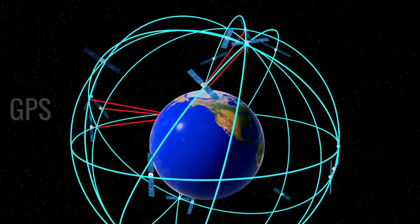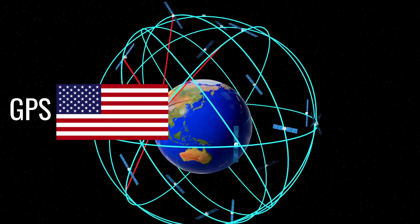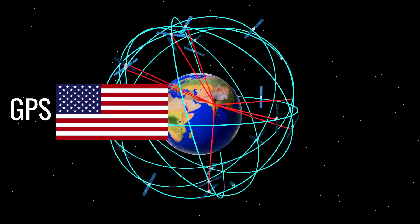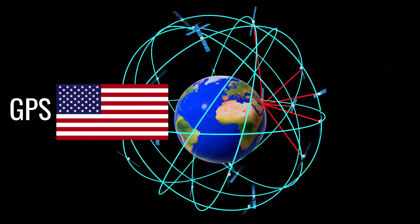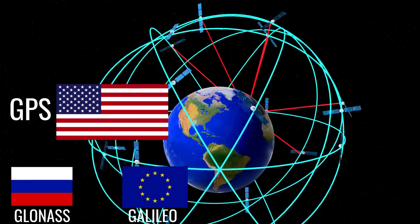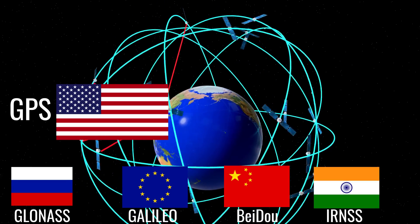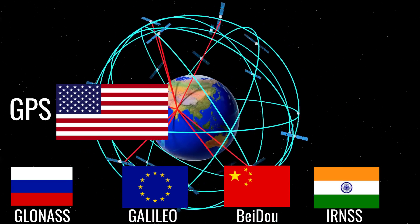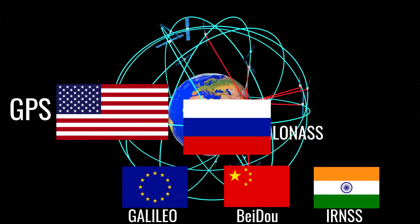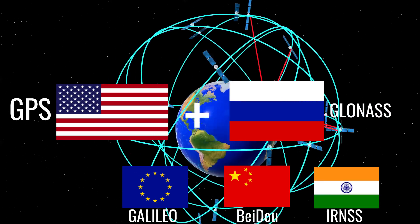GPS is a navigation system developed by the U.S. Department of Defense and is completely free for the public. However, there are accurate alternatives available in many countries nowadays. Modern receivers simultaneously make use of GPS and other navigation systems to get the most accurate position.